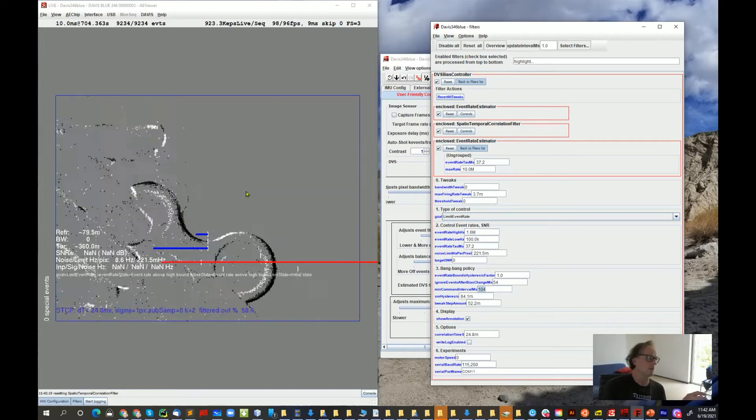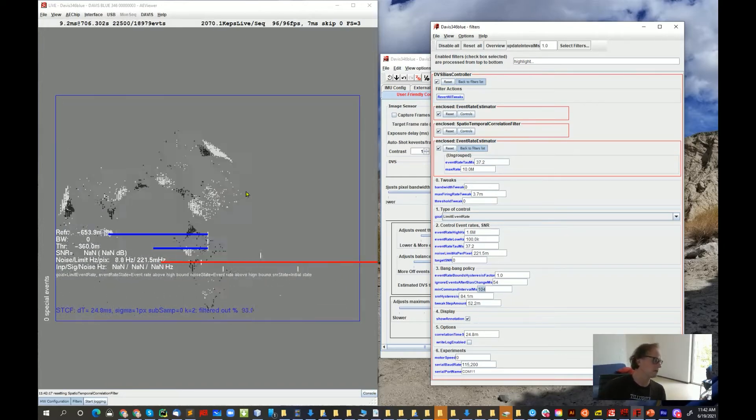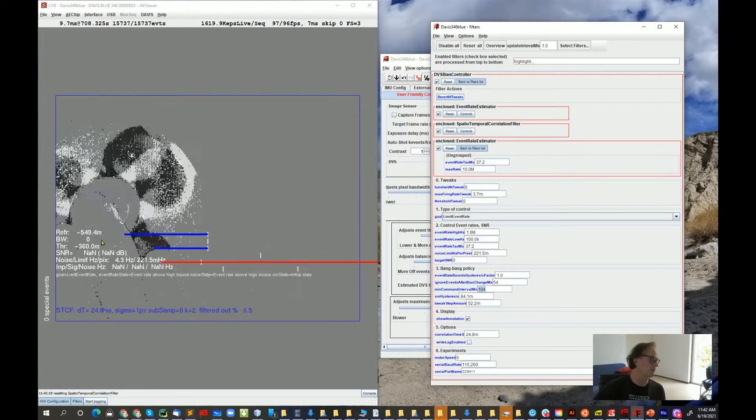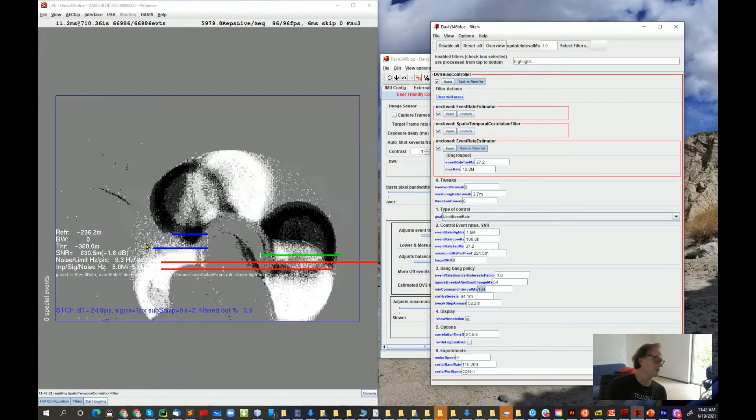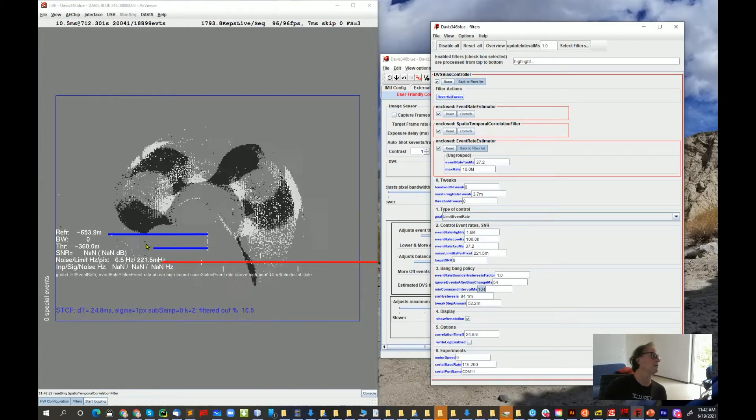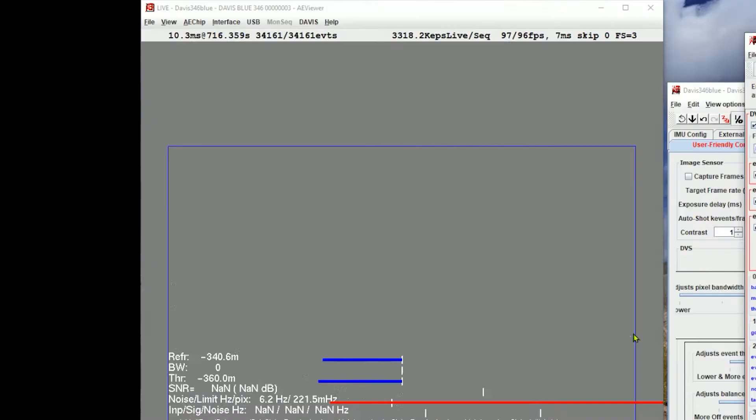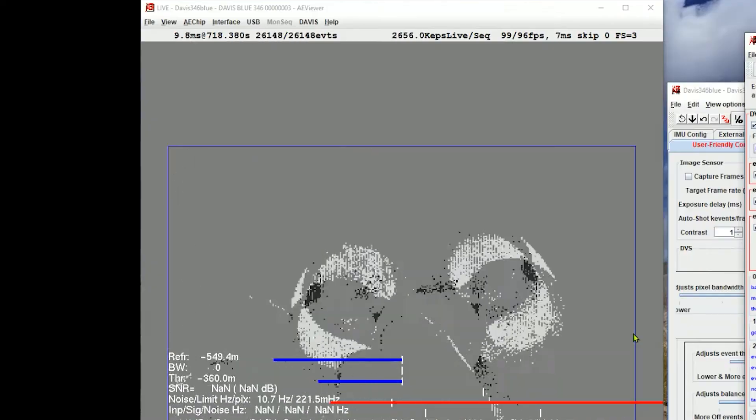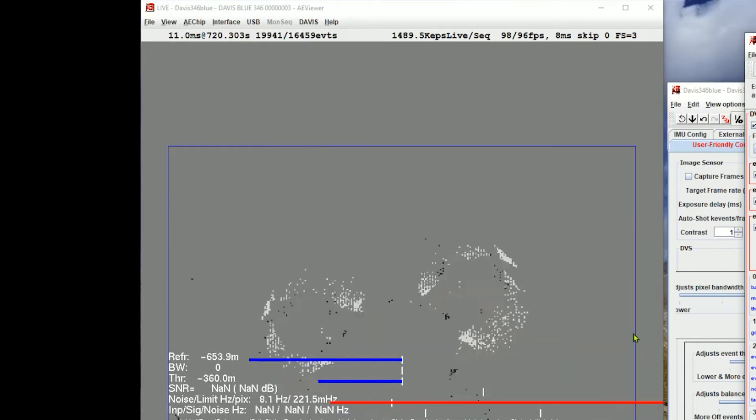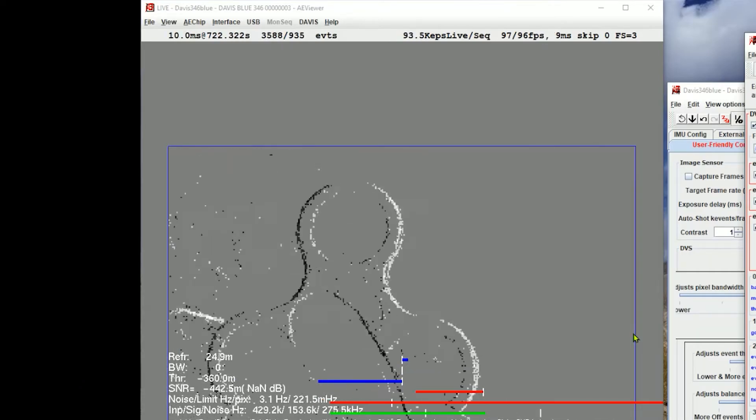Now this control is actually enabled. Look at the event rate here, and look at the tweak. This is the tweak right here of the refractory period. As this fidget starts spinning faster, the tweak is increased, but now the event rate when I spin the fidget very fast only goes up to about 4 million events per second or 3 million because of this limit of the refractory period.